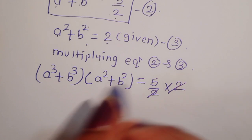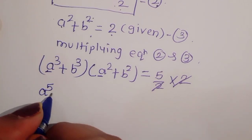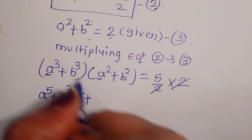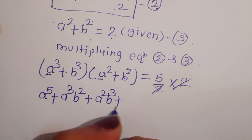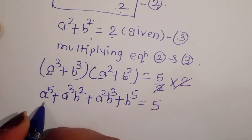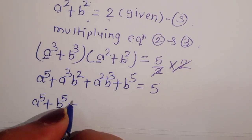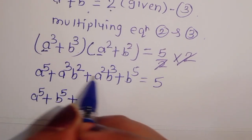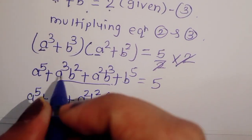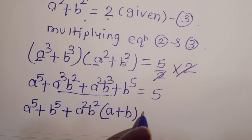Expanding the left side: a power 5 plus a cube b squared plus a squared b cube plus b power 5 is equal to 5. Rearranging: a power 5 plus b power 5 plus a squared b squared times (a plus b) is equal to 5.